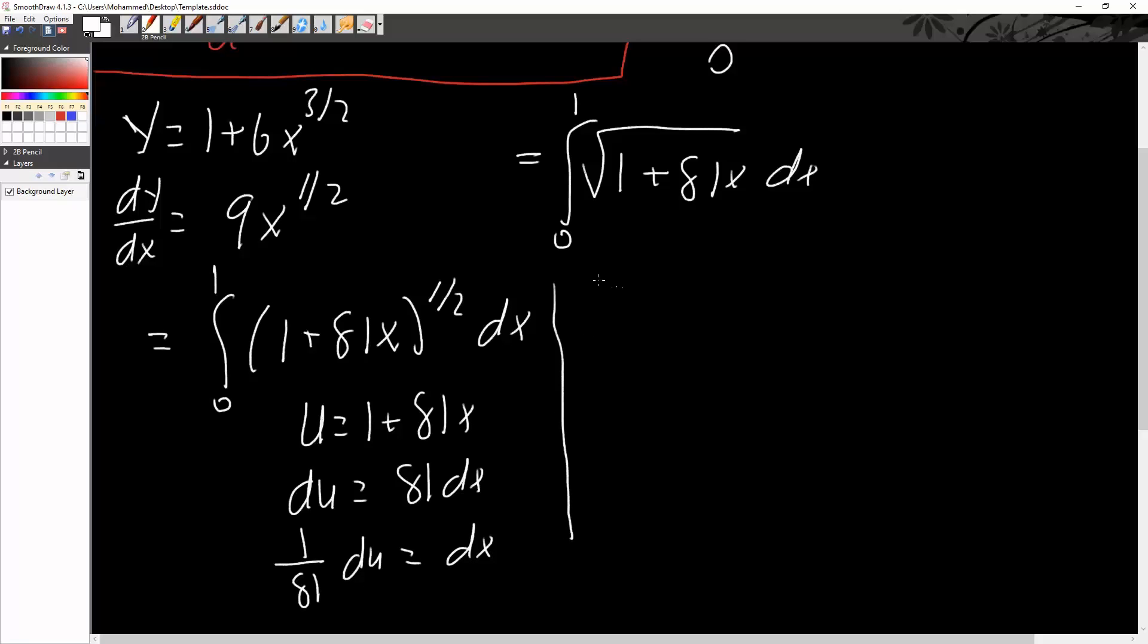And because of that, we can say... actually not, we won't say that. We will say u to the 1 half, times 1 over 81 du.